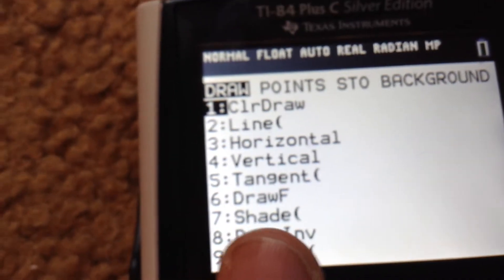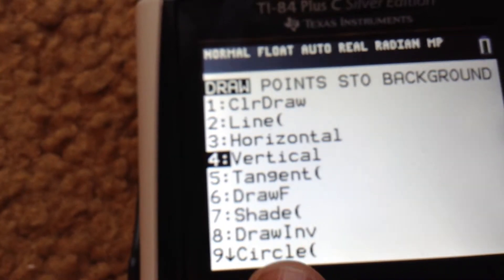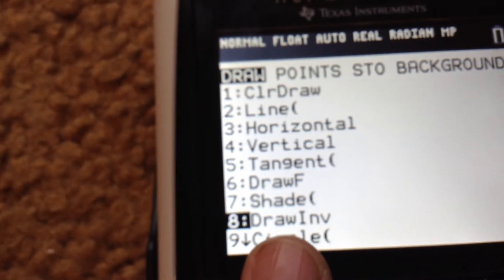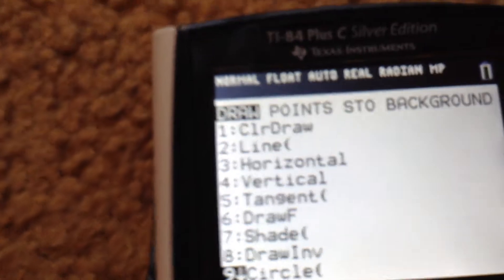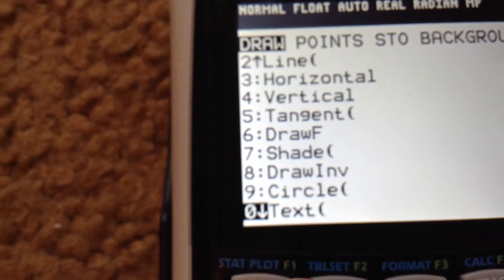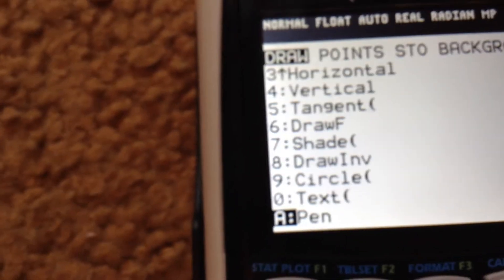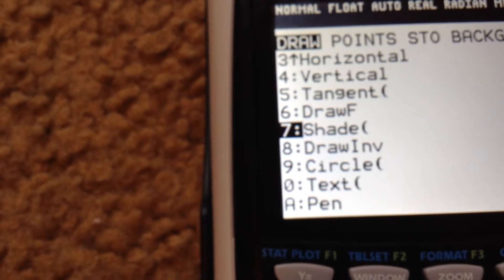The first one is to clear. You have lines, horizontal, vertical, shading, drawing, circle, text, and pen. We're going to go over a bunch of these, and let's start with line.